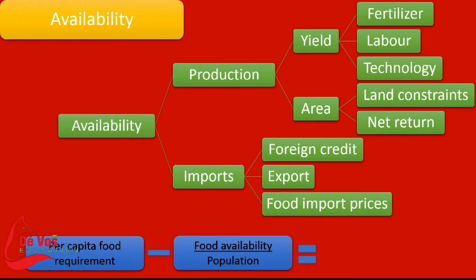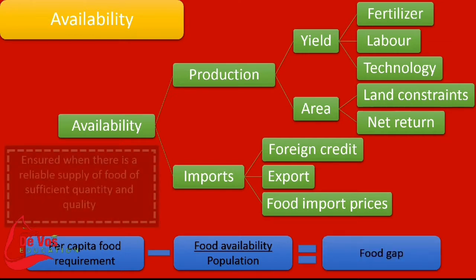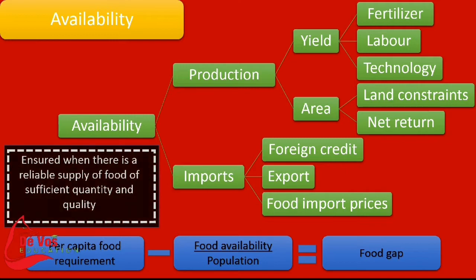The per capita food requirement minus the food availability per population shows us what the food gap is. Availability is ensured when there is a reliable supply of food of sufficient quantity and quality for the entire population.